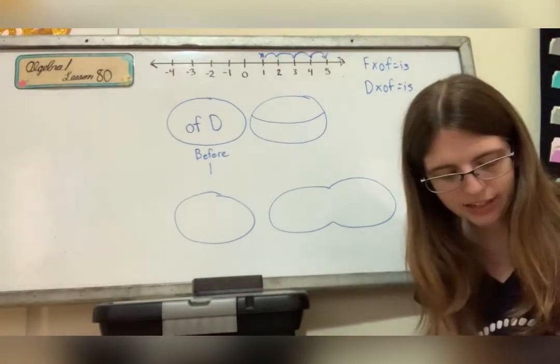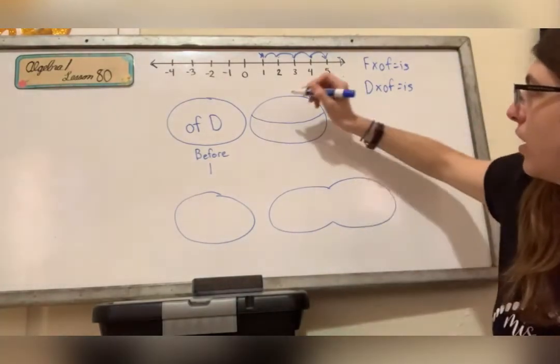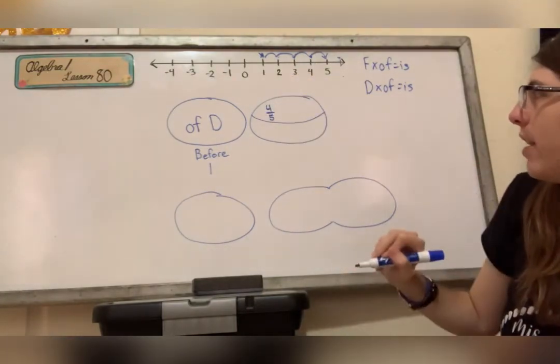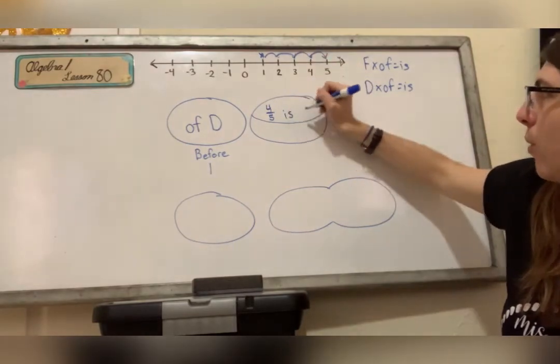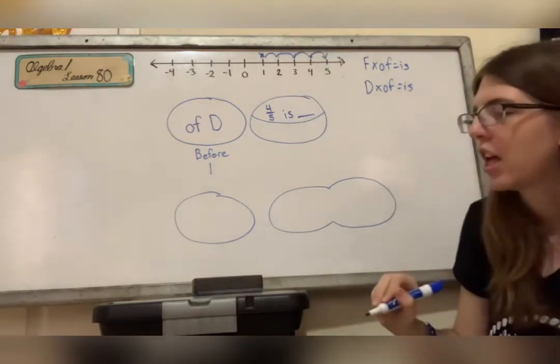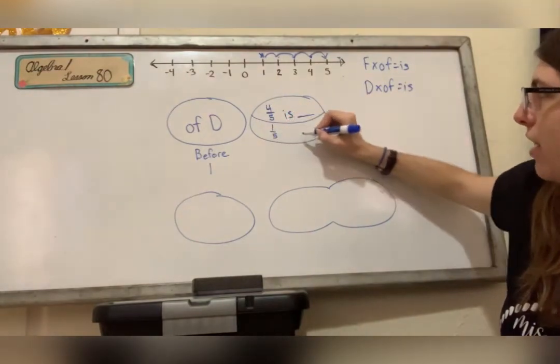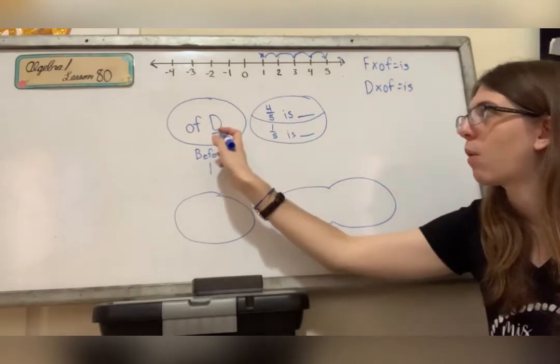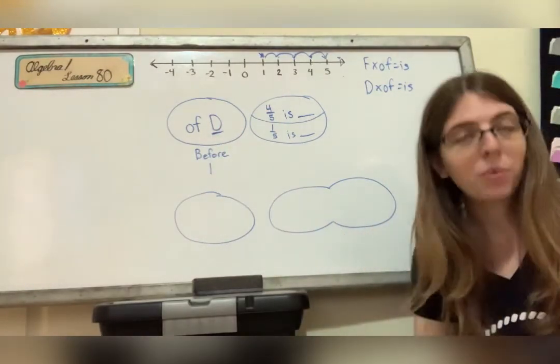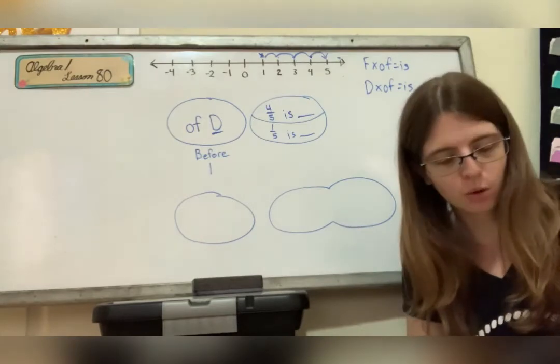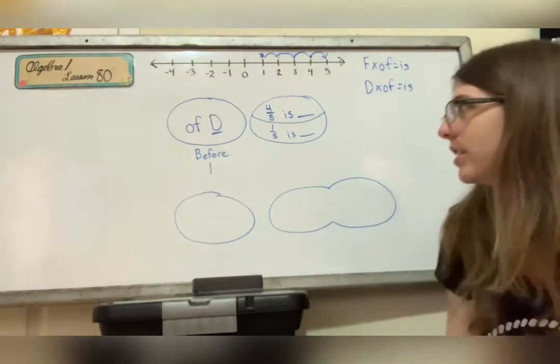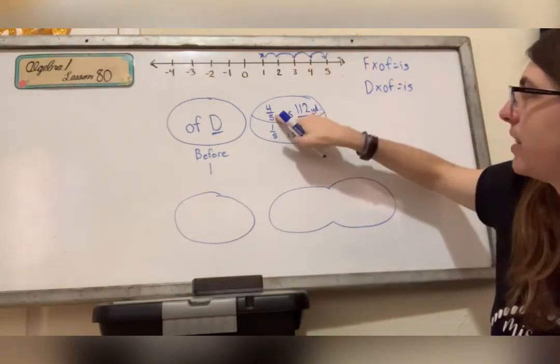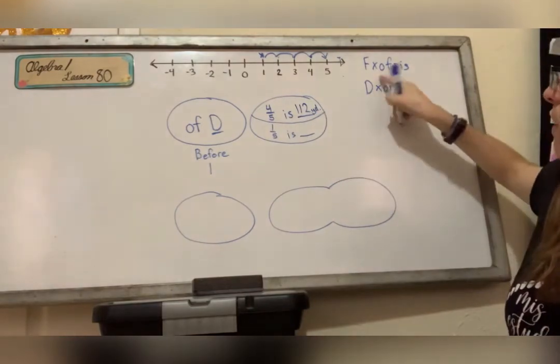Now it only went four fifths of this. So we have to use this particular one because our fraction is less than one. So four fifths is what? So that means the other distance would be one fifth. Now we are looking for this number, the required distance. What do we know? Well, we know it went four fifths of the required distance. So we know it went 112 yards, and we know that that 112 yards would be four fifths of this.